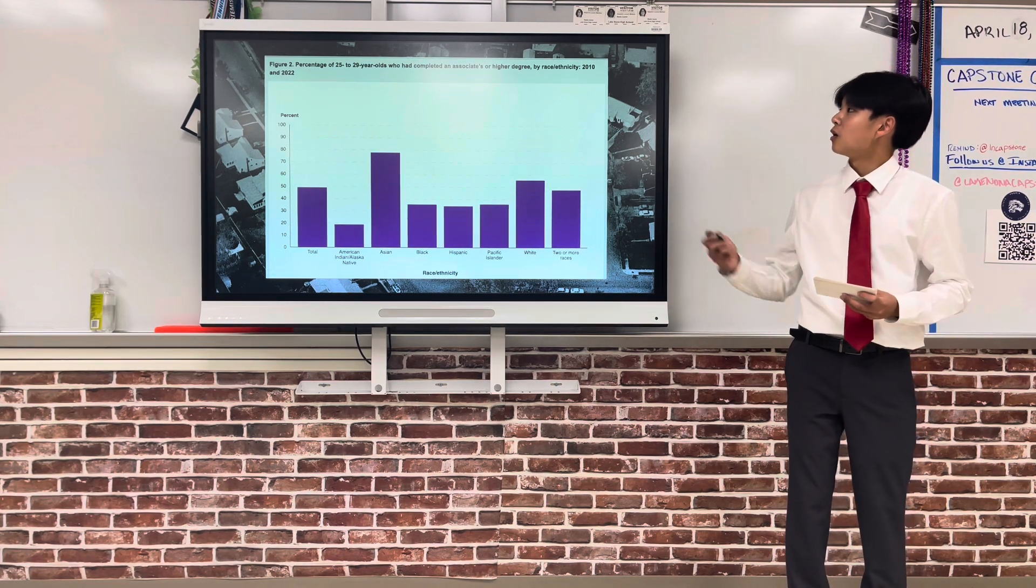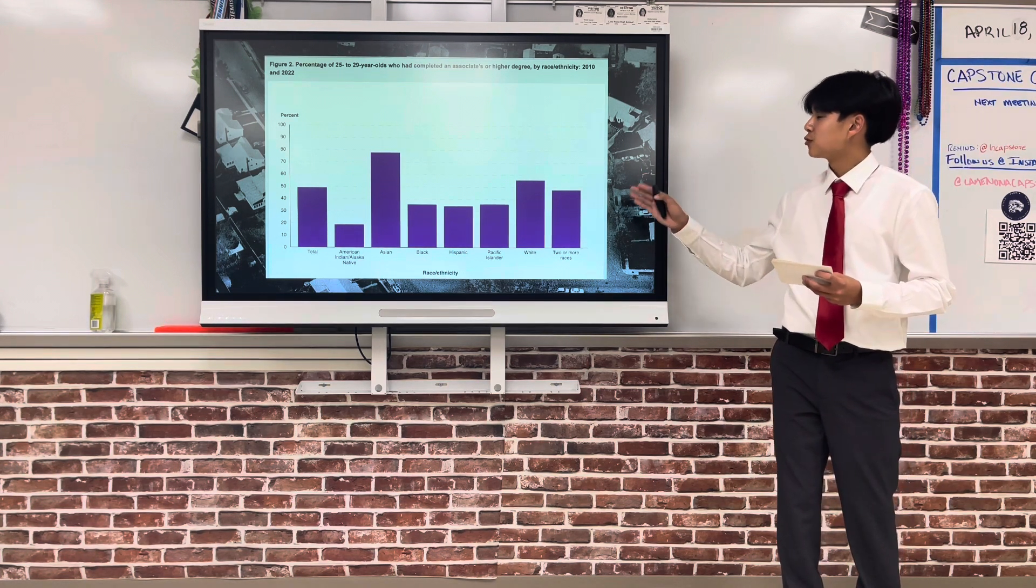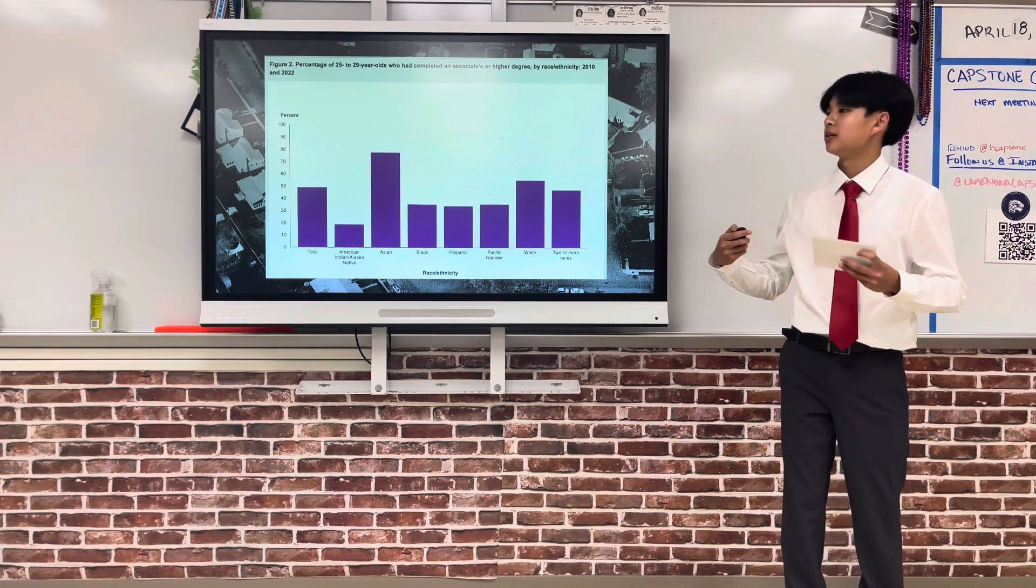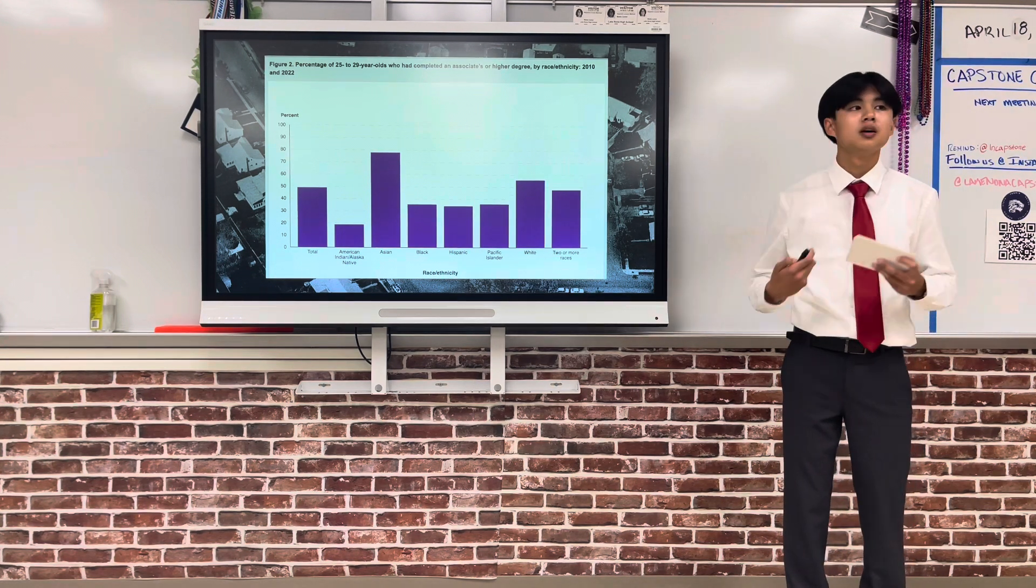It indicates that African Americans between the ages 25 through 29 have a roughly 55% chance of having an associate's degree or higher, whereas African Americans average around 35%.